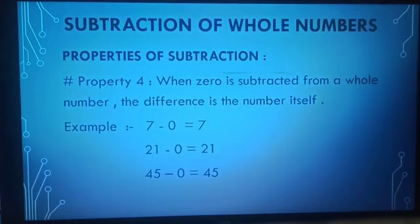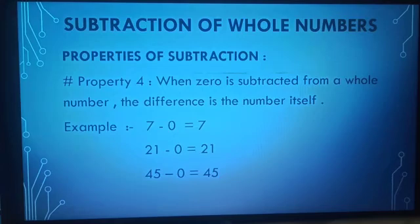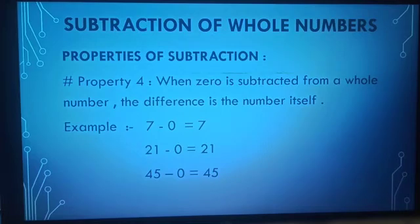In the next property: when 0 is subtracted from a whole number, the difference is the number itself. For example, 7 minus 0 is equal to 7, and 21 minus 0 is equal to 21.